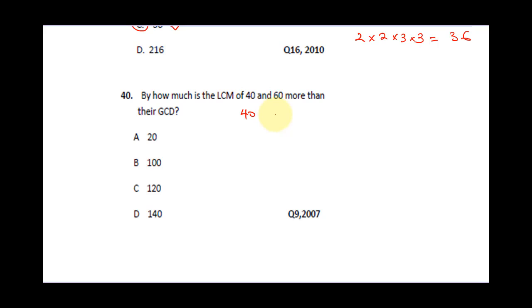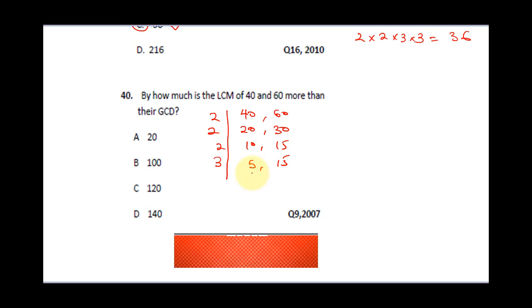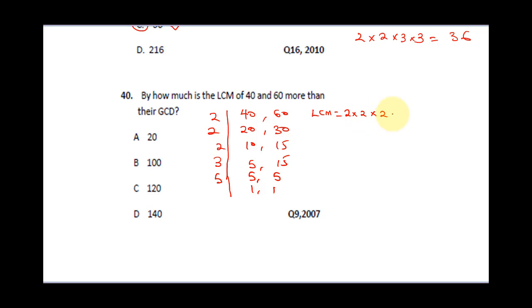So let's get the LCM first. 2 into 40 we get 20, 2 into 60 we get 30. 2 can go again, we have 10 and 15. We can still go, we have 5 and 15. 3 can go, we have 5 and 5. Then 5 can go, we have 1 and 1. So the LCM is gonna be 2 times 2 times 2 times 3 times 5. This is 2 times 2 that's 4, times 2 is 8, times 3 is 24. 24 times 5 gives us 120.